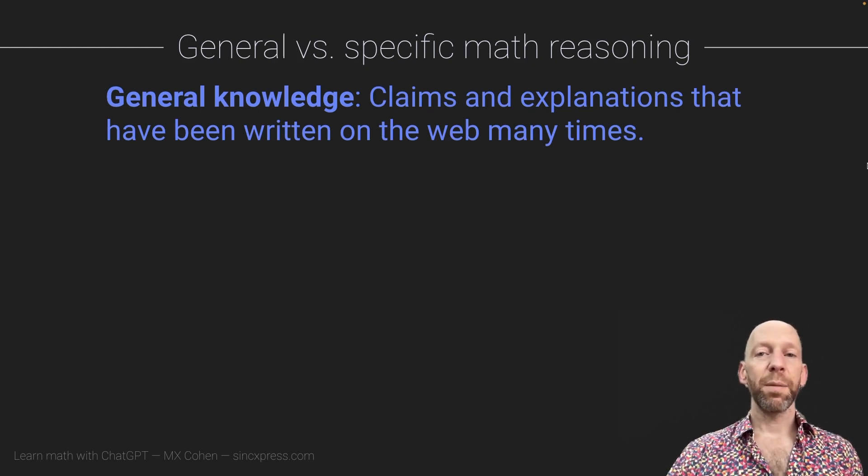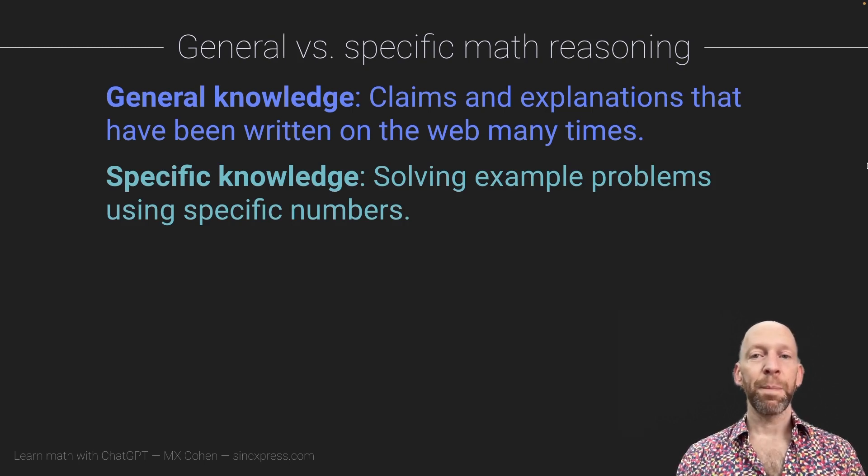On the other hand, specific knowledge or specific reasoning is about solving a particular math problem with specific numbers, so a particular arithmetic problem.